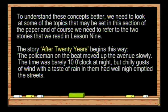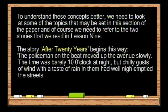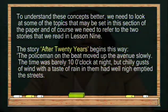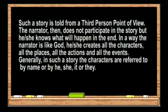To understand these concepts better, we need to look at some topics that may be set in this section of the paper and refer to the two stories read in Lessons 9 and 10. The story 'After 20 Years' begins: 'The policeman on the beat moved up the avenue slowly. The time was barely 10 o'clock at night, but chilly gusts of wind with a taste of rain in them had well-nigh emptied the streets.' Someone is telling us about the policeman and his meeting with Silky Bob, but the teller of the story is not part of the story. Such a story is told from a third-person point of view.